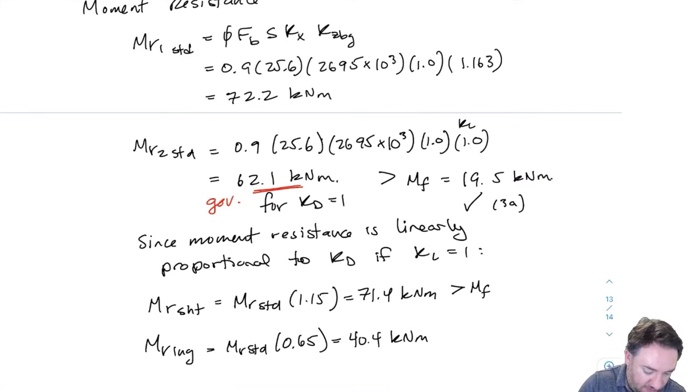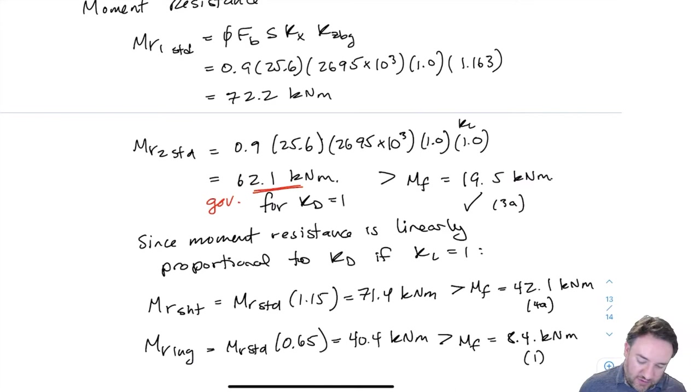So I can find that for the short-term load and for the long-term load. What are my MRs? And I can compare those to my MFs. So for the short-term load, the maximum MF for any load case was 42.1 kilonewton meters. So that's fine. And that's from 4A. And for the long-term load, it's from case one, which had 8.4 kilonewton meters. That's from case one. So these are all good. Every single moment resistance is greater than every single applied moment.